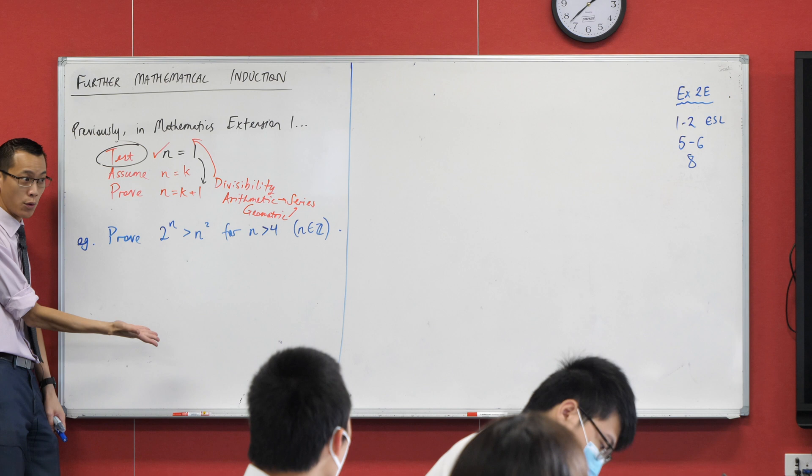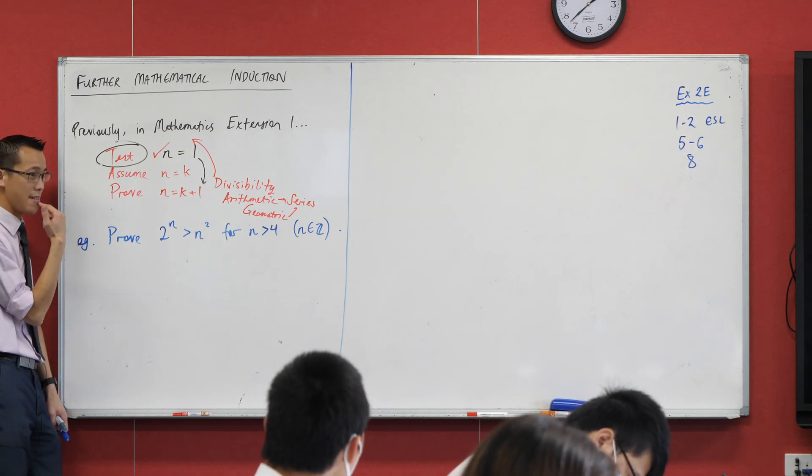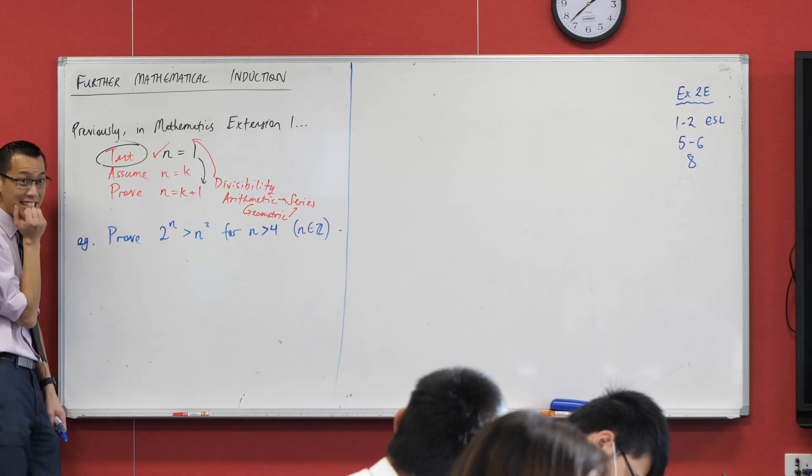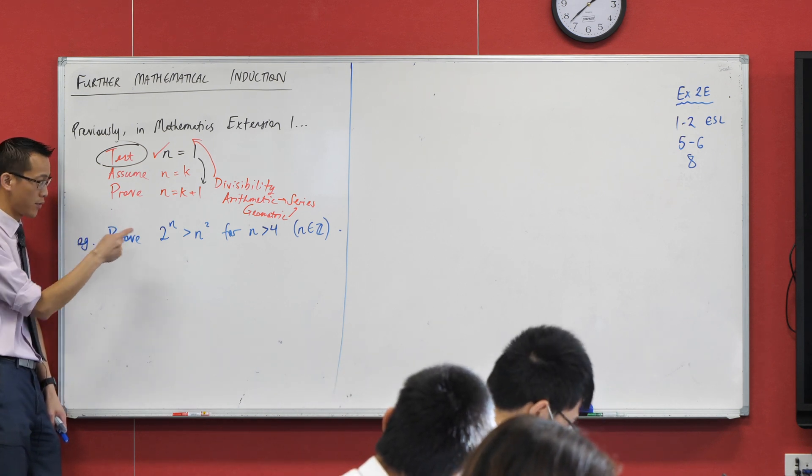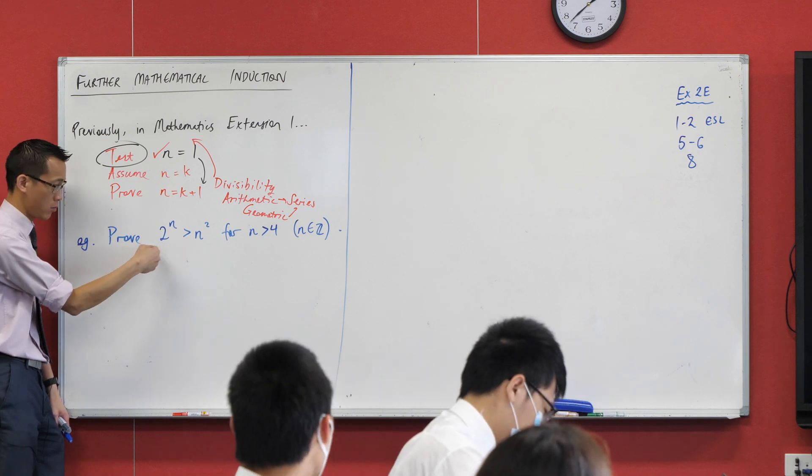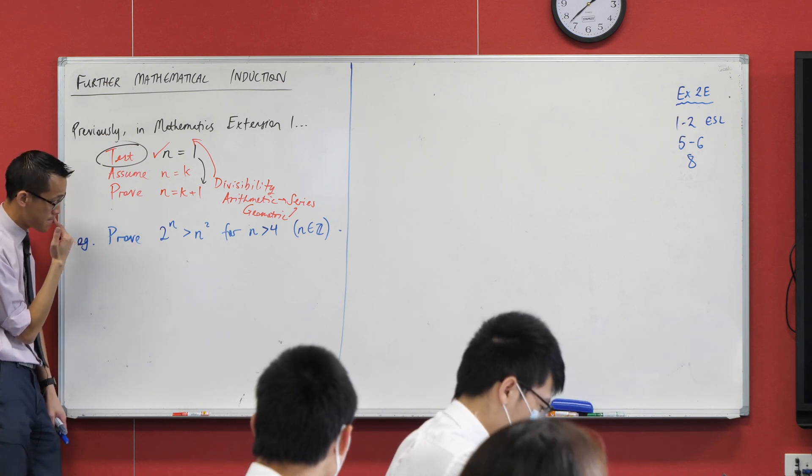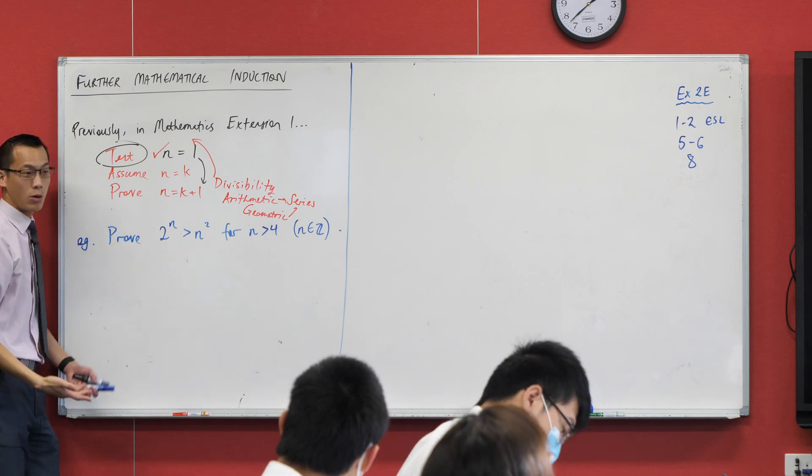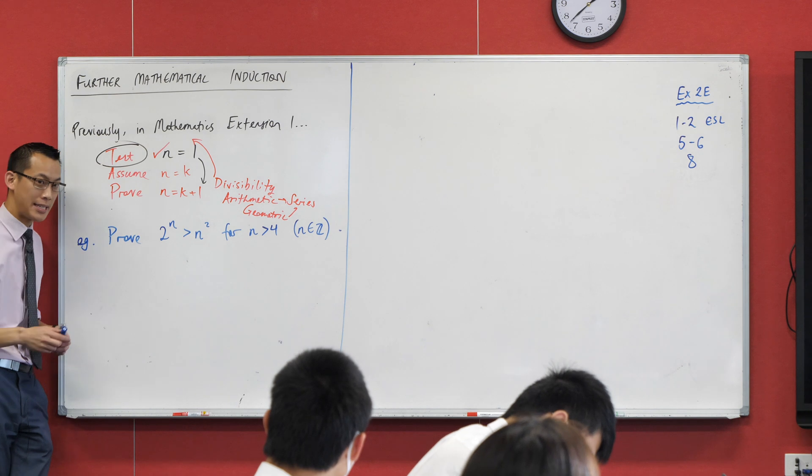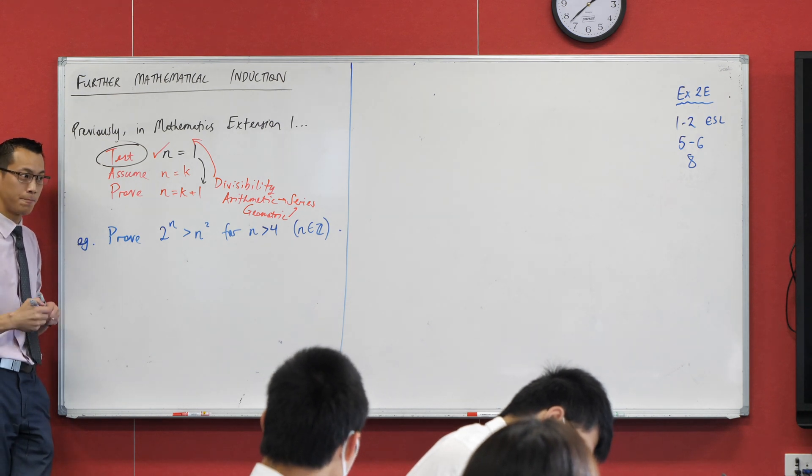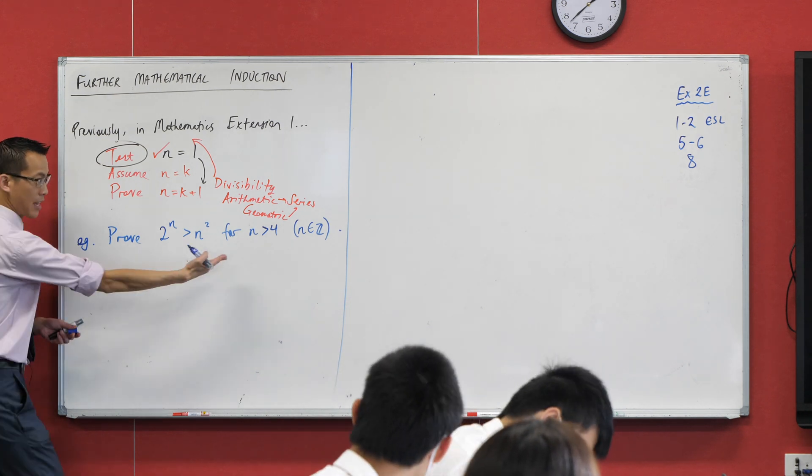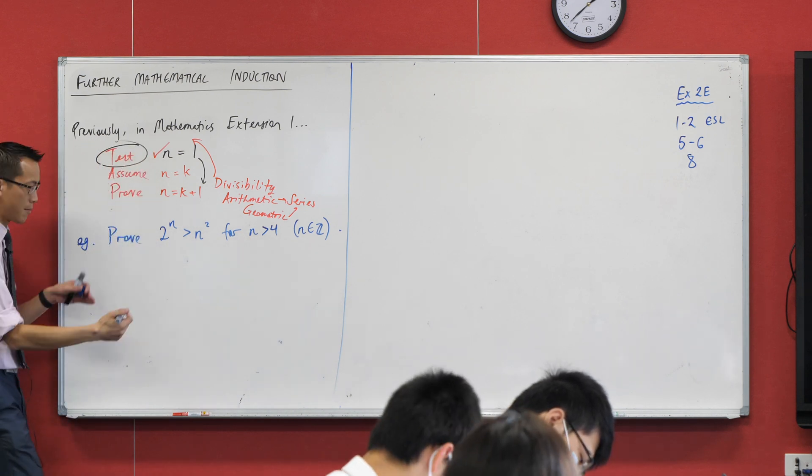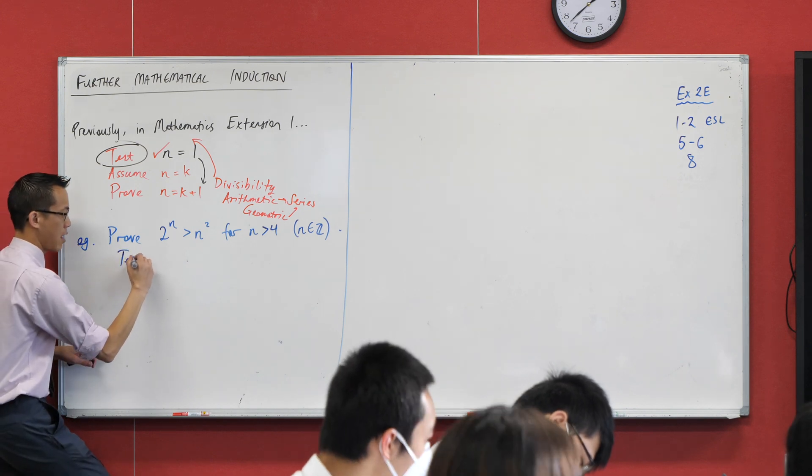You can't test n equals 1 for this. Just have a quick look at it. Is this always going to work for 1, 2, 3, 4? You can clearly see there are going to be some small values for which this is not going to work. n equals 3 for example, 8 not bigger than 9. So where are we going to begin given the particular restriction that I provided for you? 5, because I've said n is greater than 4. I'm dealing with whole numbers, so let's go ahead and just say test n equals 5.